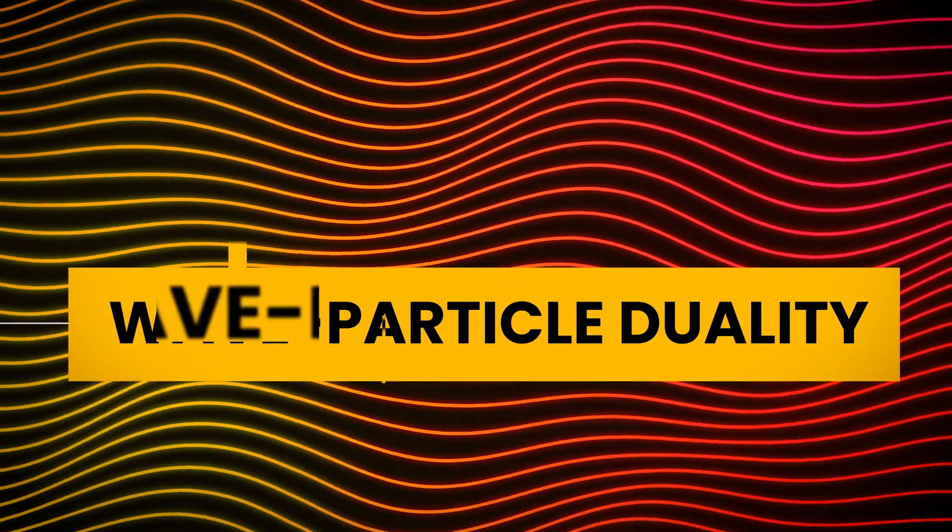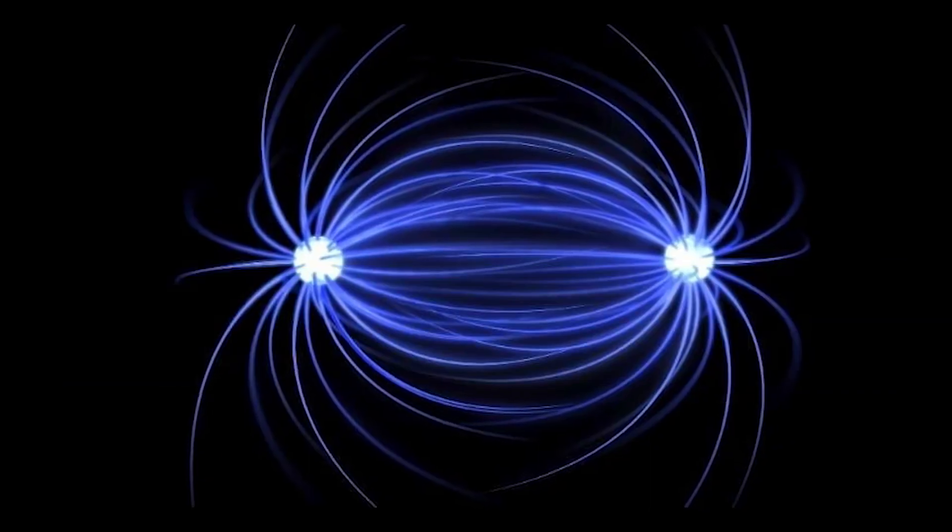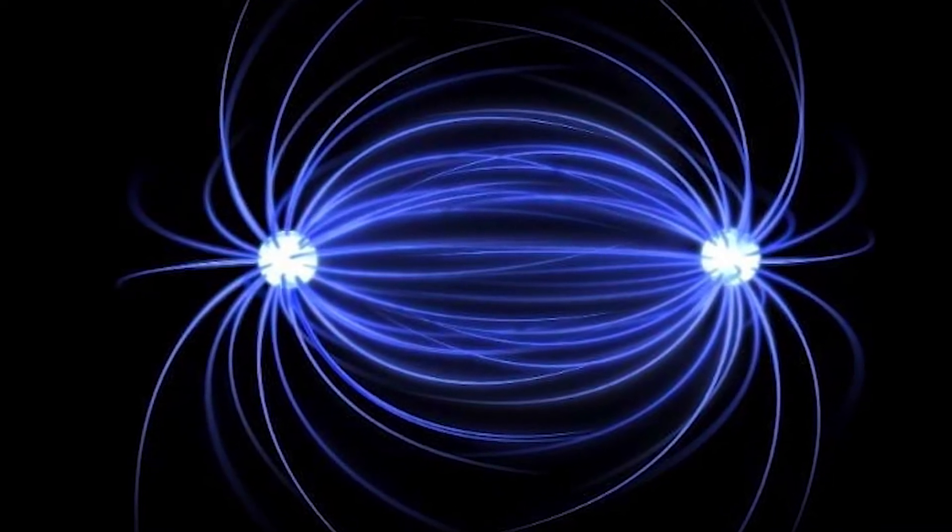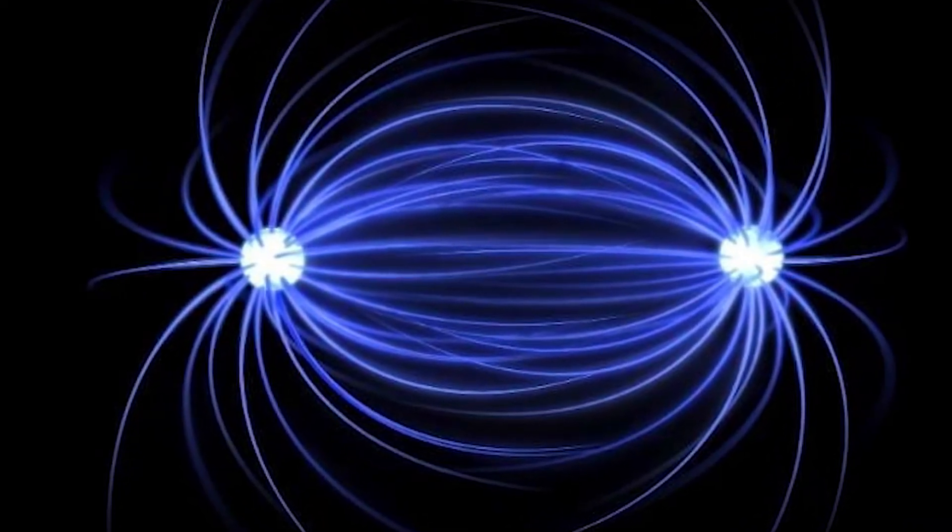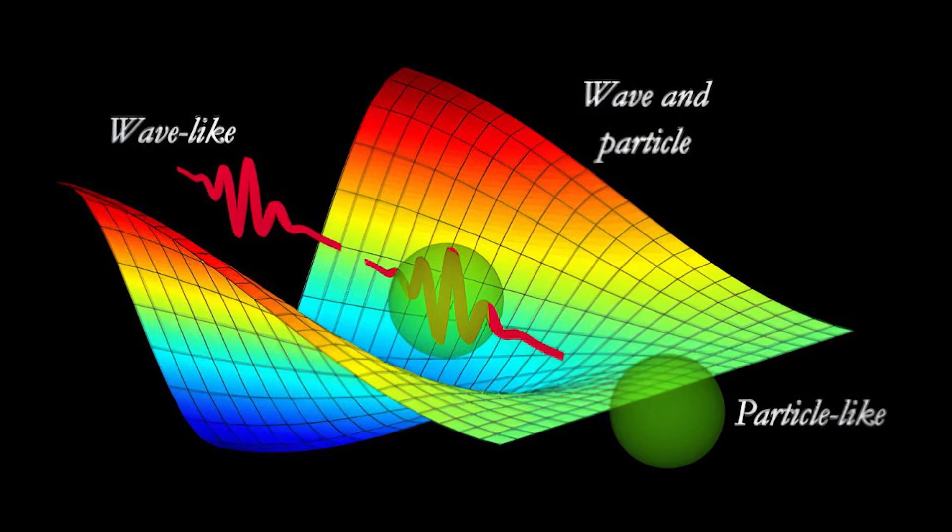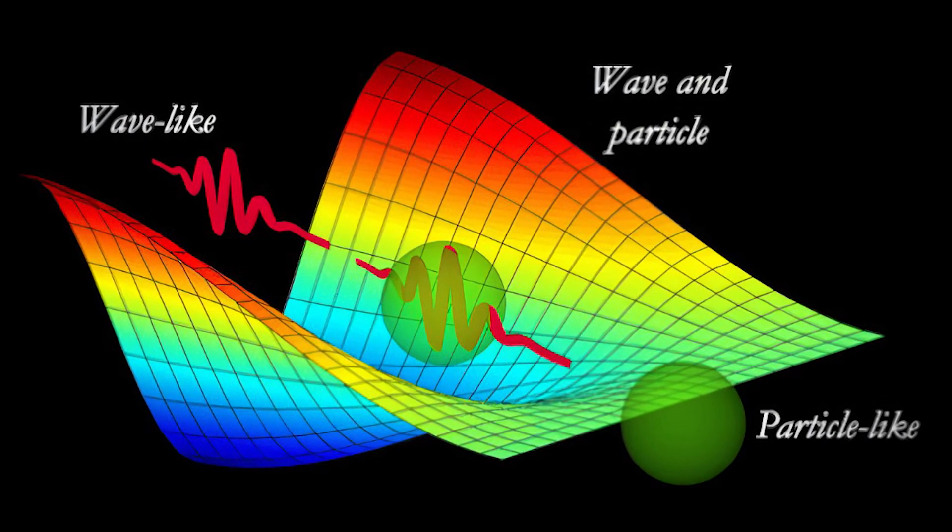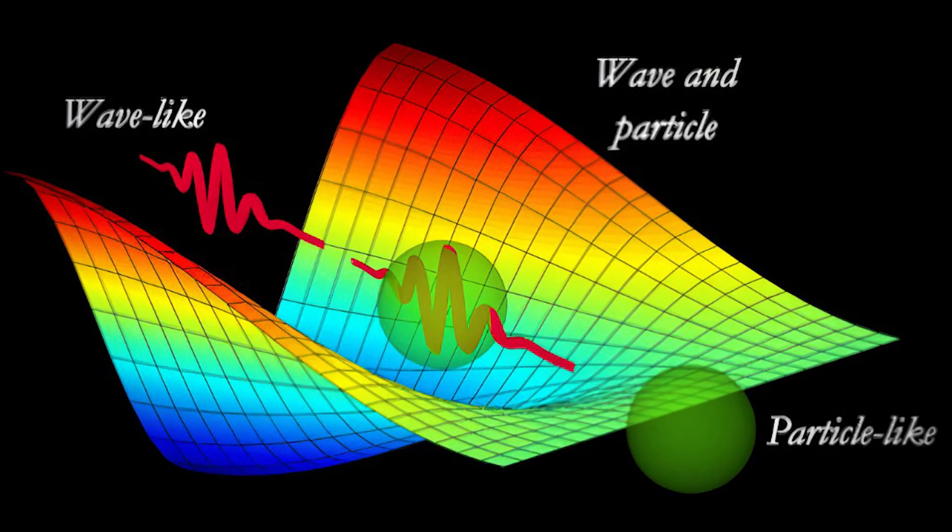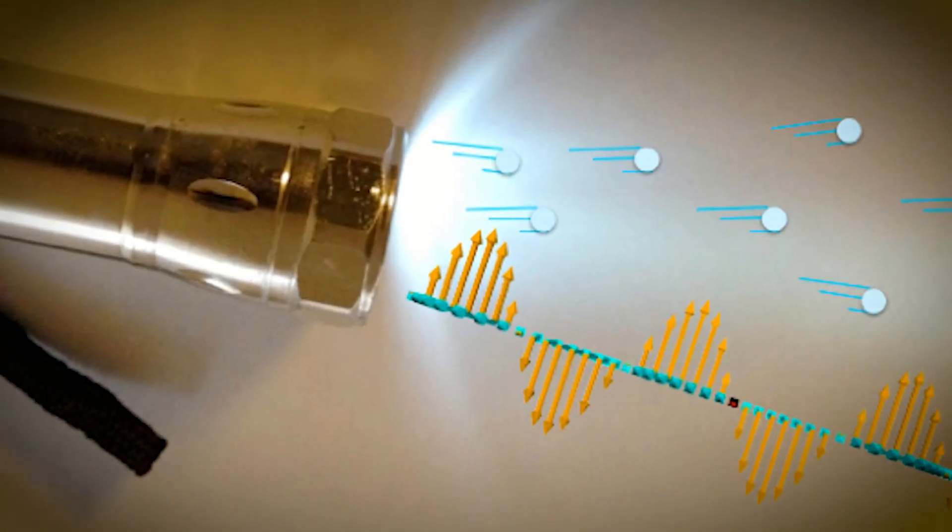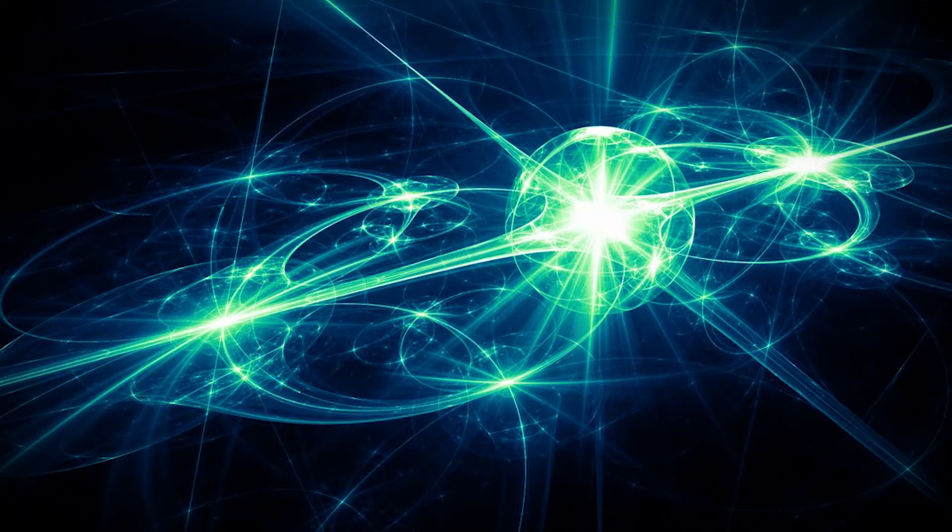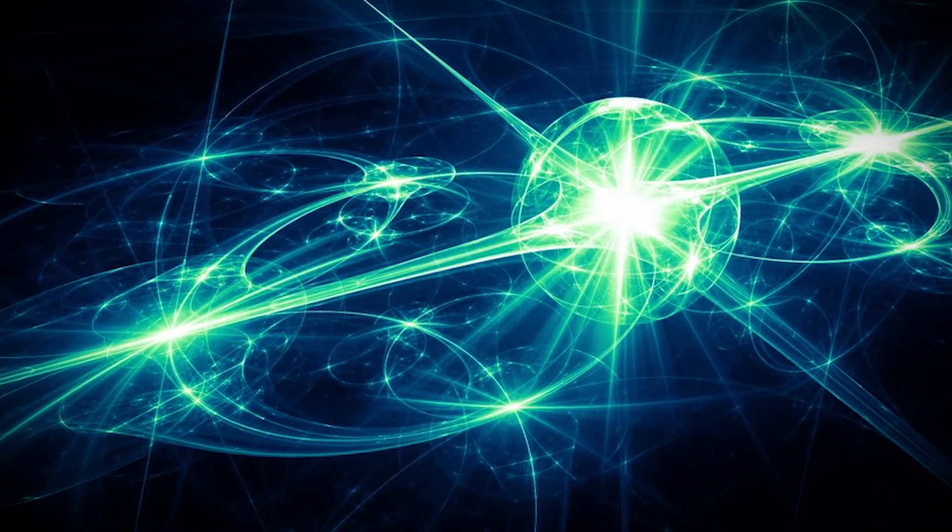The seventh is wave-particle duality. Albert Einstein's work on the development of quantum theory was some of the most impactful he ever accomplished. During his early career, Einstein persisted in asserting that light should be treated as both a wave and a particle. In other words, photons can behave as particles and as waves at the same time. This became known as wave-particle duality.